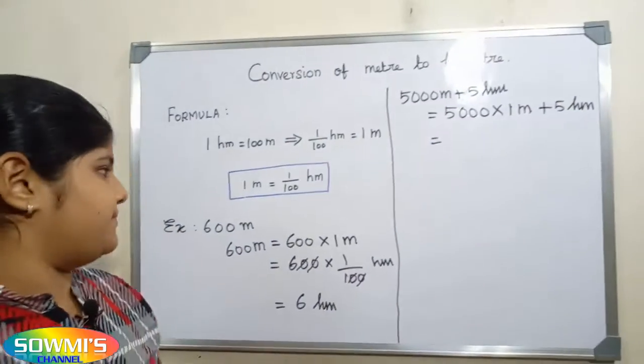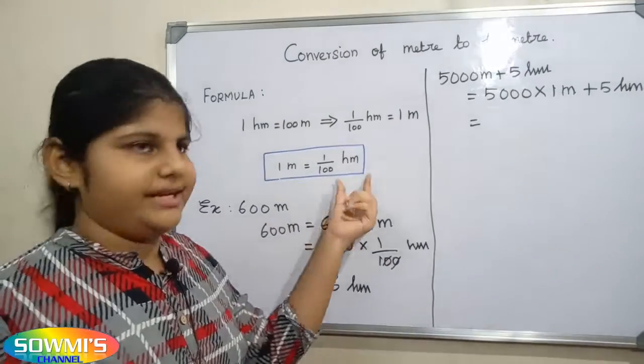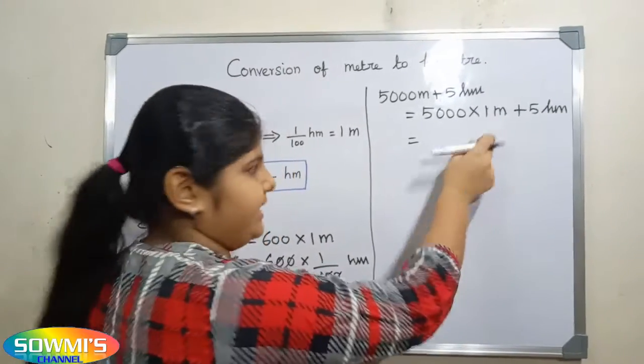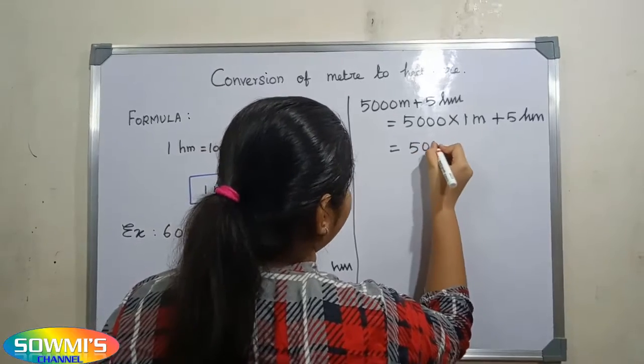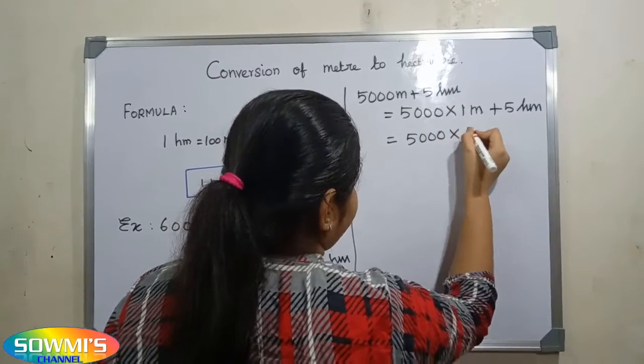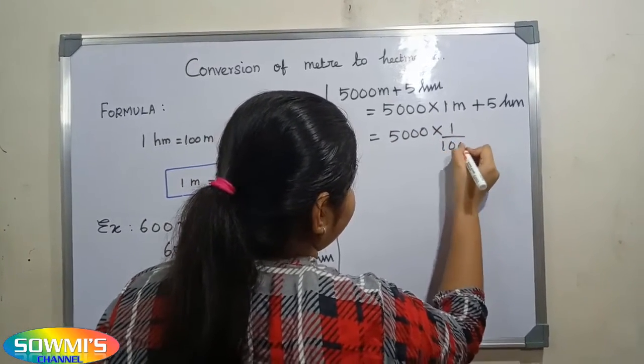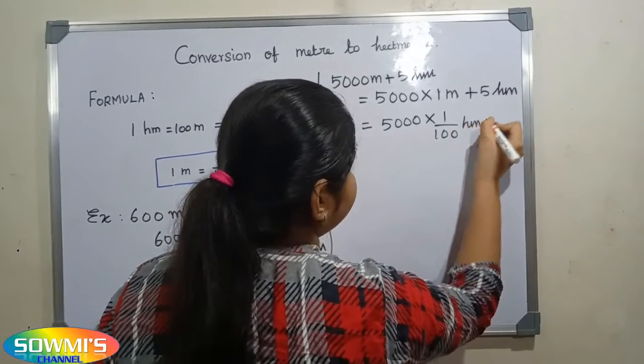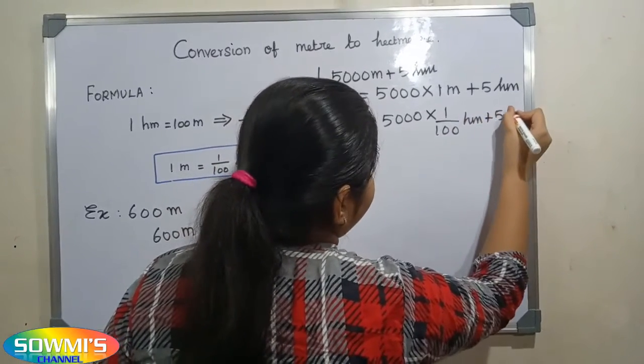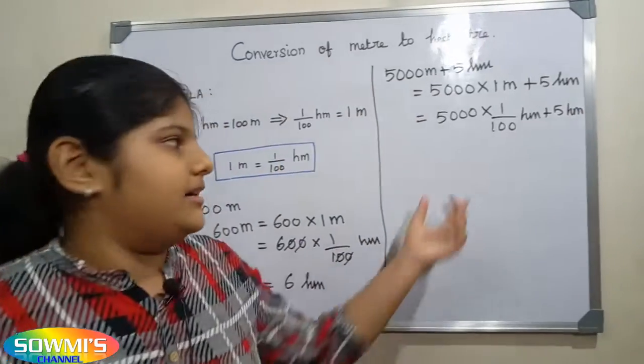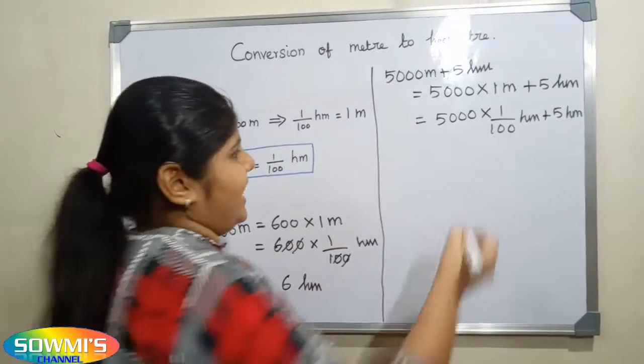Now we have to substitute 1/100 hectometer in the place of 1 meter. So 5,000 multiplied by 1/100 hectometer plus 5 hectometers. Now the zeros get cancelled.